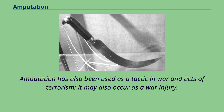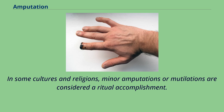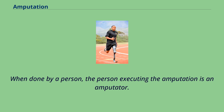Amputation has also been used as a tactic in war and acts of terrorism, and it may also occur as a war injury. In some cultures and religions, minor amputations or mutilations are considered a ritual accomplishment. When done by a person, the person executing the amputation is an amputator.